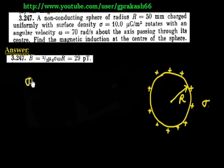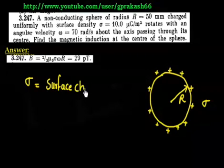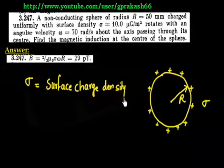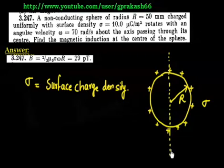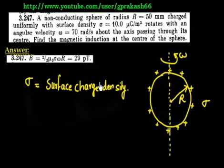So sigma is the surface charge density. We have to calculate the magnetic induction at the center. This sphere is basically rotated about an axis with angular velocity omega. So we have to find the magnetic field at the center.